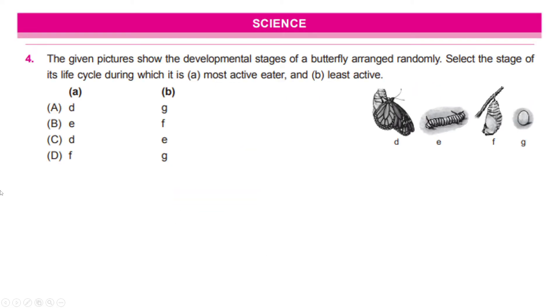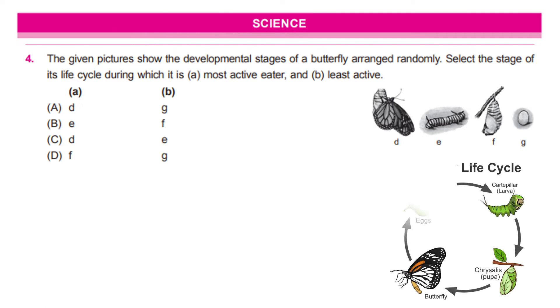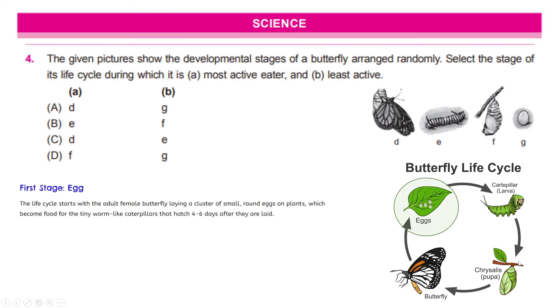Next question, the given picture shows the developmental stages of a butterfly arranged randomly. Select the stage of its life cycle during which it is A is for most active eater and B is for least active. Click the right answer. Well, to explain, I would want you to understand the four stages of the butterfly life cycle. The first stage is when the adult butterfly lays a cluster of small rounded eggs on plants which later become a tiny caterpillar which is the second stage. And in this stage, the caterpillar eats its way out. So, it is the feeding stage and the only job that caterpillar has is to feed. That means it would be the most active eater in this stage.